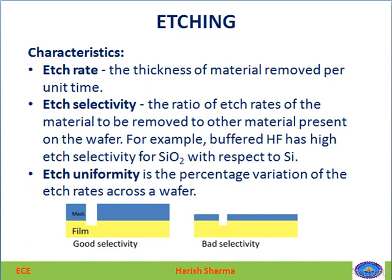The characteristics of the etching process are etch rate, etch selectivity, and etch uniformity. Etch rate is the thickness of material removed per unit time. Etch selectivity is the ratio of the etch rate of the material to be removed to the etch rate of the material present on the wafer.